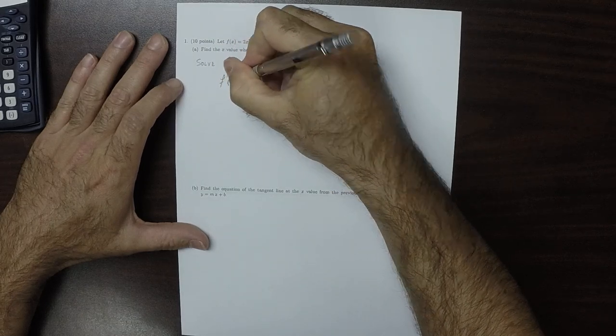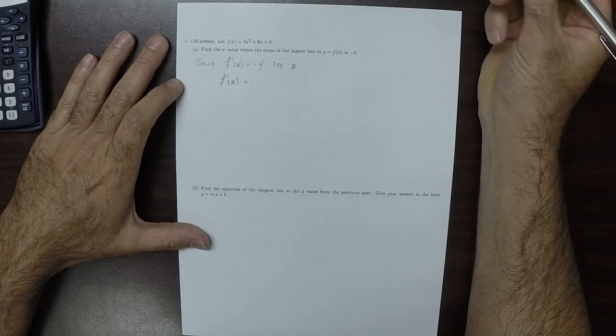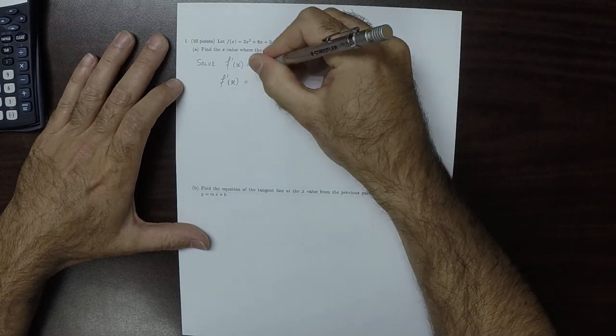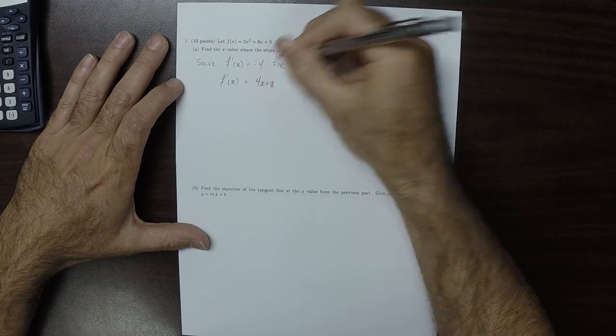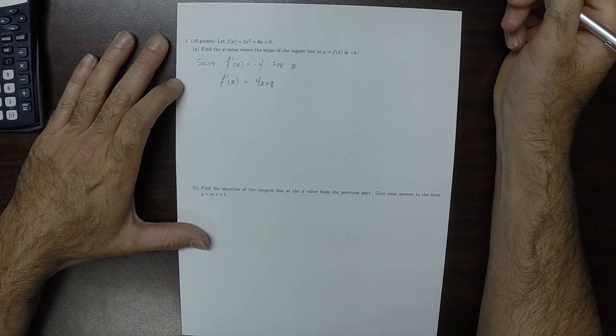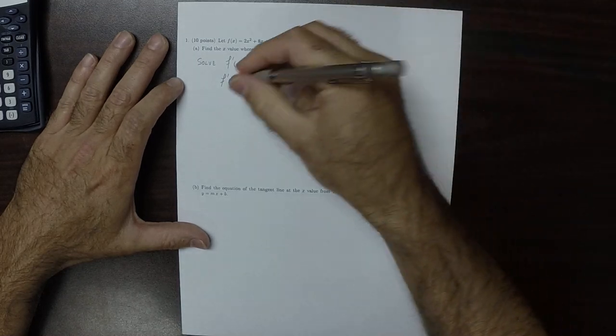Let's compute the derivative. The derivative is 4x plus 8. And we want to solve 4x plus 8 equal to negative 4.